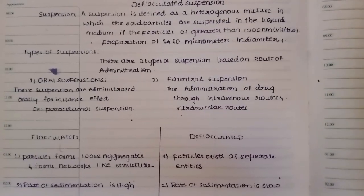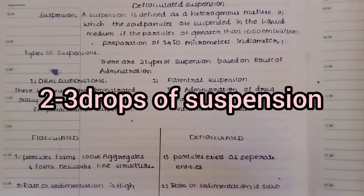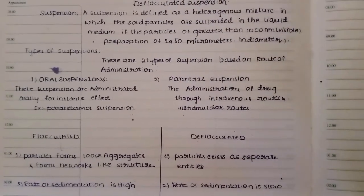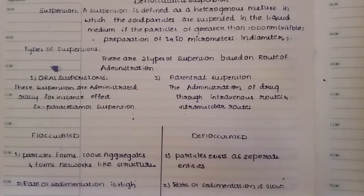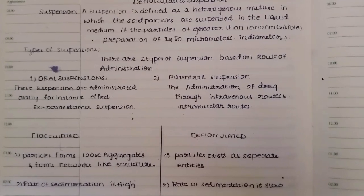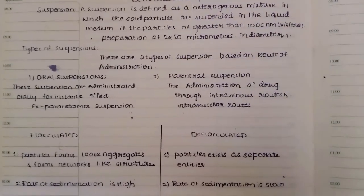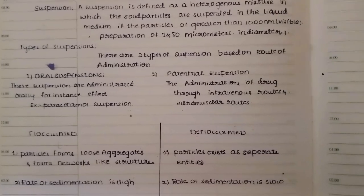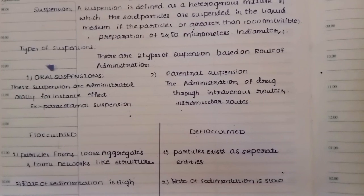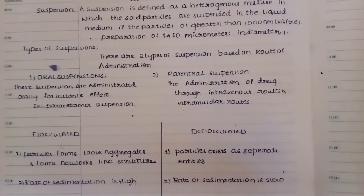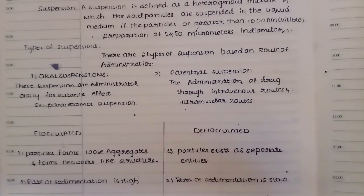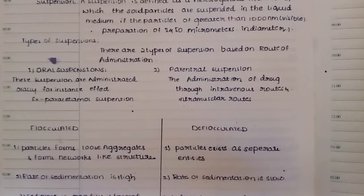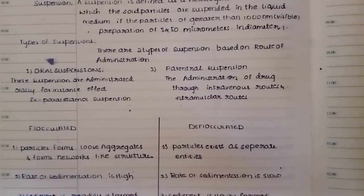If there is a small particle suspended in liquid, the exact shape and size will be changed. If there is a length and width of the particle, we will use microscopy as a direct method. We will be doing this experiment in practical, and we can observe suspension and solid particle size. The diameter is 1 to 50 micrometers.